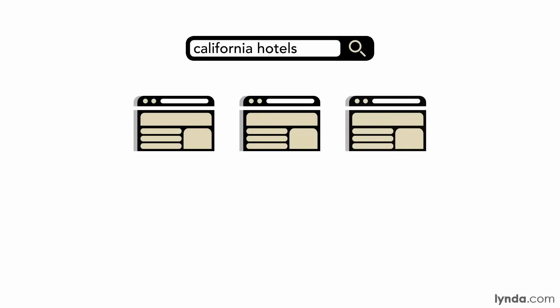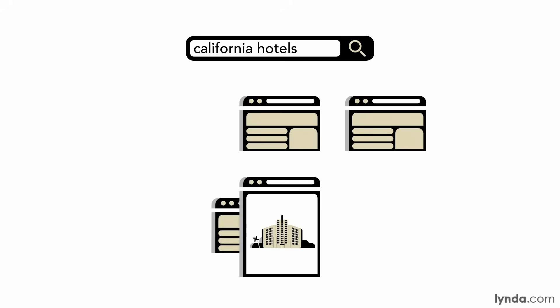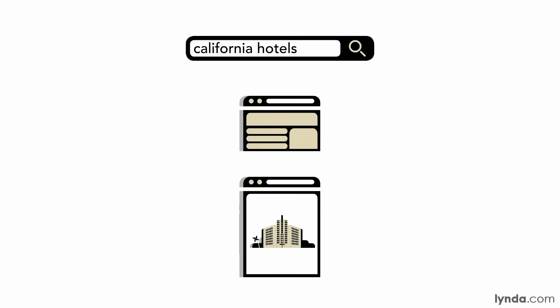First, let's talk about relevance. When a user searches for something like California hotels, search engines want to show a list of results that are relevant to the topic of California hotels. Search engines will analyze all of the web pages that they've ever visited and pick out the pages that they believe are the most relevant to California hotels.